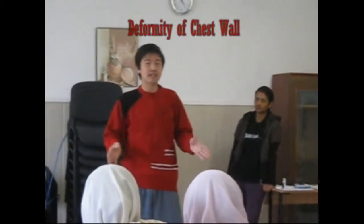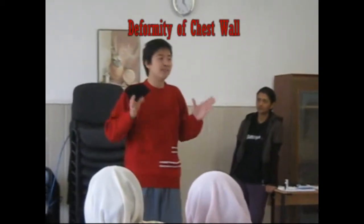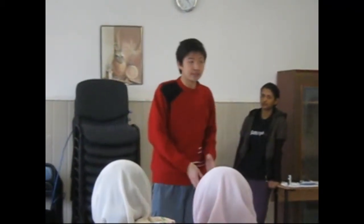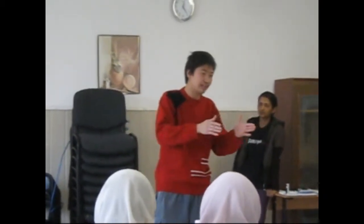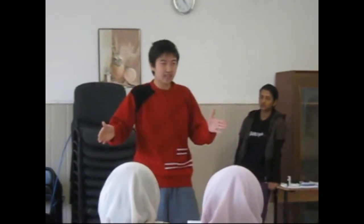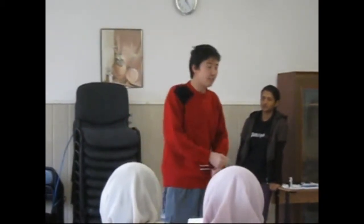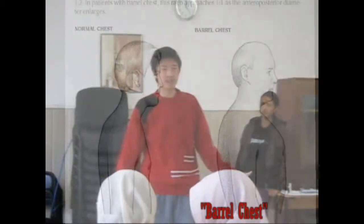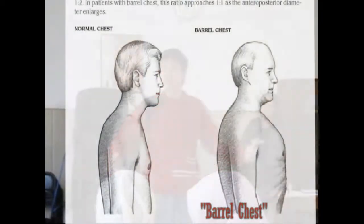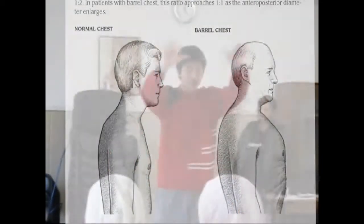C is chest deformity. So we will look at C — any deformity on the chest. There are a few groups we must know: four common simple chest deformities. The first is barrel chest — like in COPD patients. You guys see a lot of COPD; their chest is really barrel-shaped.